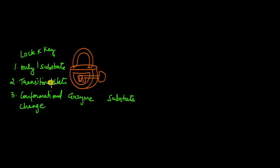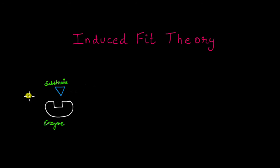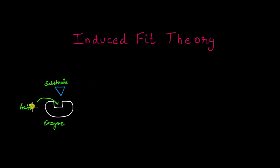Scientists were trying to come up with a model that could explain these limitations and still explain how enzymatic reactions took place. That's when they came up with the induced fit theory, which is what we'll be learning today. Now how does this theory work? Suppose this is an enzyme. This is the active site of the enzyme — the site where the substrate is going to come and bind — and this is the substrate.